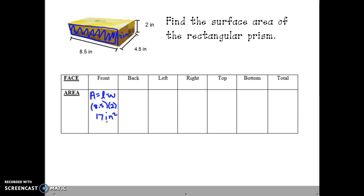8.5 times 2 gives us an area of 17 square inches for the front face. We know that the back face must also have an area of 17 square inches because the back face is congruent to the front face.